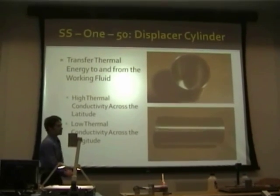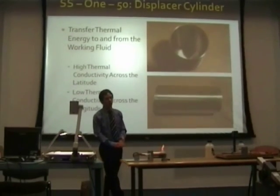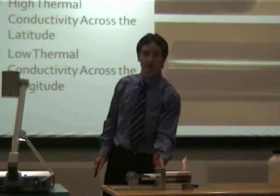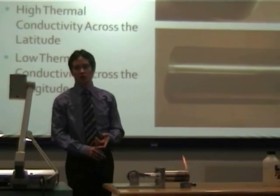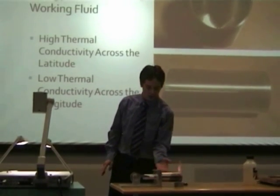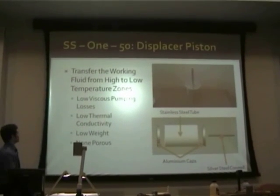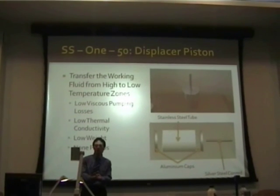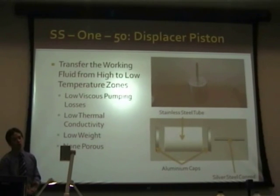The displacer cylinder is a stainless steel cylinder with 1.5 mm wall thickness. Its role is to transfer thermal energy to the working fluid at the high temperature zone and from the working fluid at the low temperature zone. An ideal displacer cylinder has high thermal conductivity cross-sectionally and low thermal conductivity along its length. Inside is the displacer piston, whose role is to transfer the working fluid from the high to the low temperature zone — ideally with low viscous pumping losses, low thermal conductivity, and low weight.